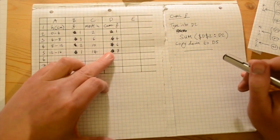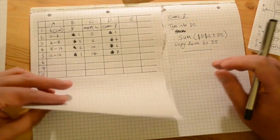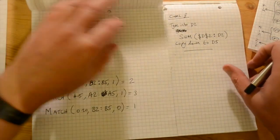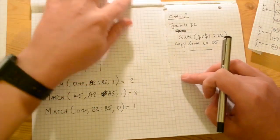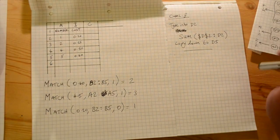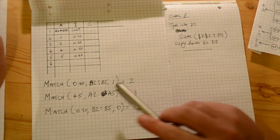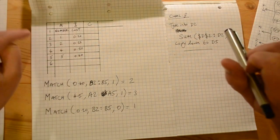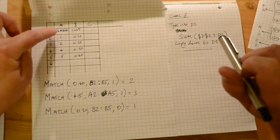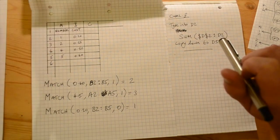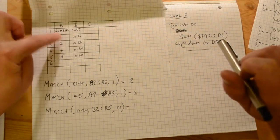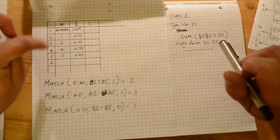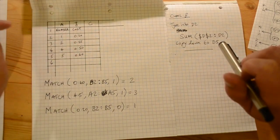Now I need to tell you about two functions in Excel — they're pretty easy to understand, so don't panic. The first one is MATCH. Here's an example Excel grid with a 'number' and 'cost' column — imagine the number of sweets and the cost to buy them. One sweet costs 20p, two sweets 35p, four sweets 50p, and five sweets 60p.